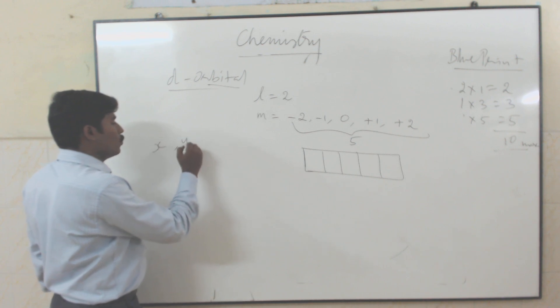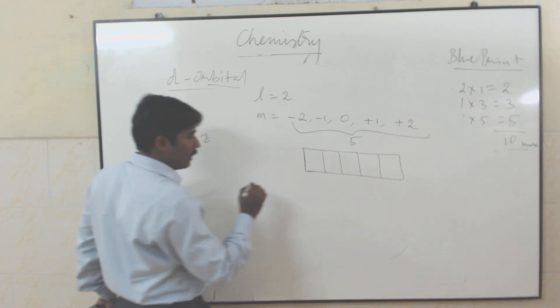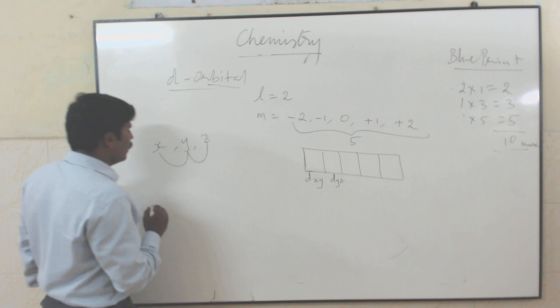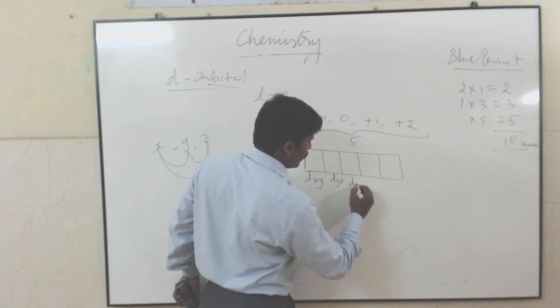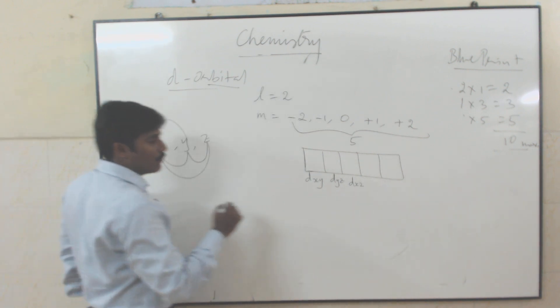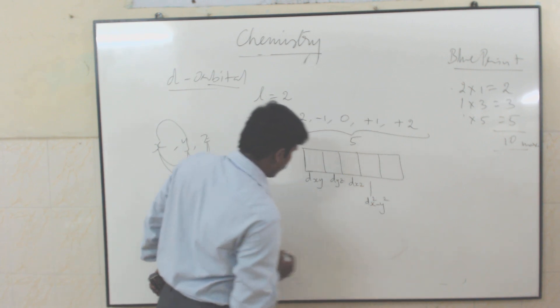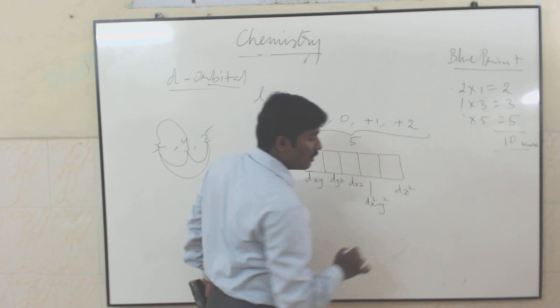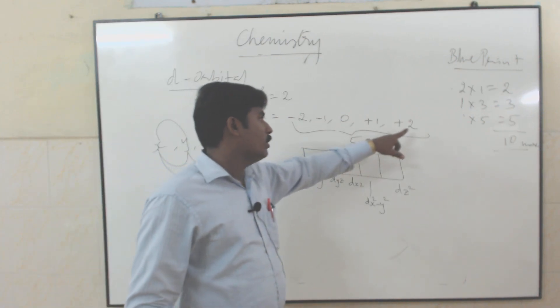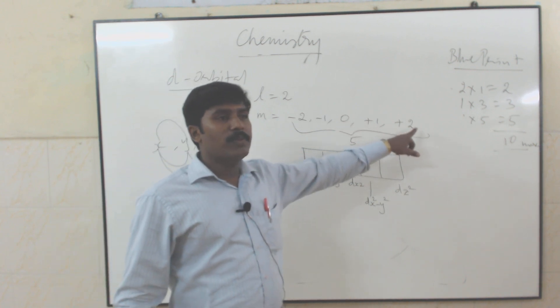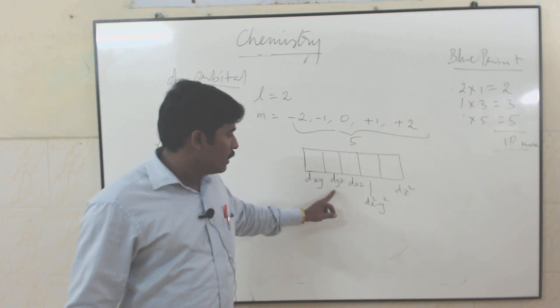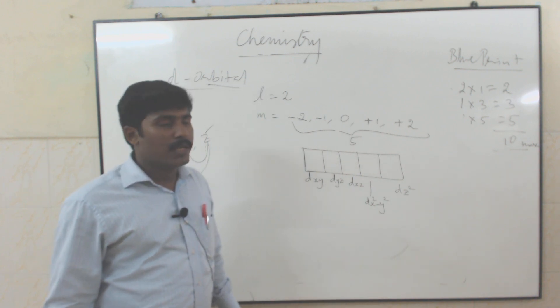What are the 5 types of d orbitals? Consider the axes x, y, and z. Combining pairs: x and y gives dxy; y and z gives dyz; x and z gives dxz. Then dx² minus y², and finally dz². These are the 5 orientations. Because l equals 2, m goes from minus 2, minus 1, 0, plus 1, plus 2 — all together 5 orientations, giving dxy, dyz, dxz, dx²-y², and dz².